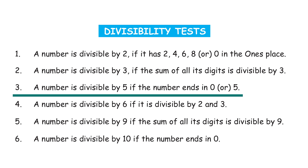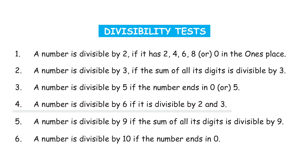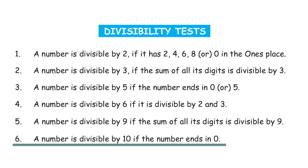The number is divisible by 5. For 6, if the number is divisible by both 2 and 3, then we can say that the number is divisible by 6. The test for 9 is: if the sum of all its digits is divisible by 9, then the number is divisible by 9. For 10, if the number ends in 0, you can say the number is divisible by 10. Today we are going to learn about a few more divisibility tests.